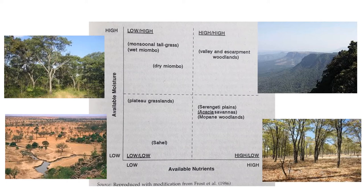In the simple two-by-two diagram: where nutrients are limited but rainfall is good, you often get poor quality but resilient grassland — a dystrophic system. A dystrophic system differs from the eutrophic bottom-right corner, where nutrients are high but rainfall is poor and variable. In eutrophic systems, grassland can be quite high quality with lots of protein in the grass, but rainfall is so poor there's high variability in fodder availability. You get a trade-off between fodder quality and fodder quantity.